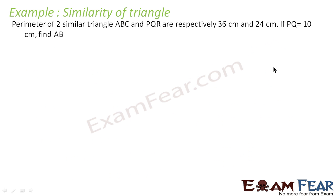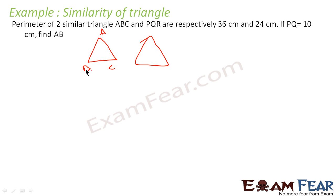The next question says the perimeters of two similar triangles ABC and PQR are 36 and 24 cm respectively. If PQ is 10, we have to find AB. Since the triangles are similar, AB/PQ equals the ratio of the perimeters.